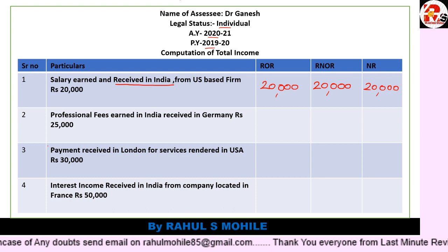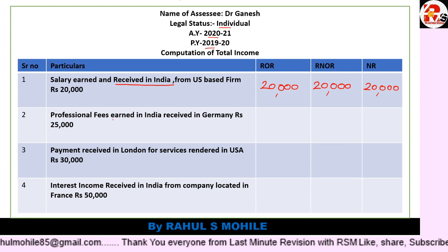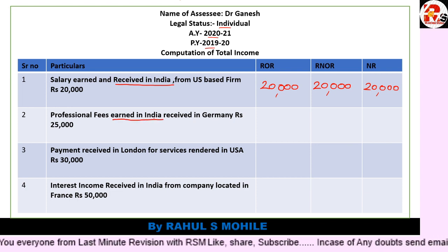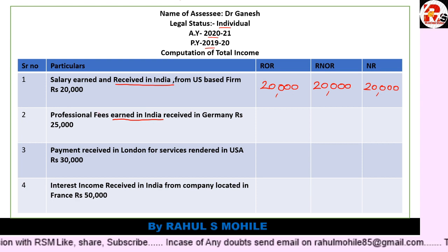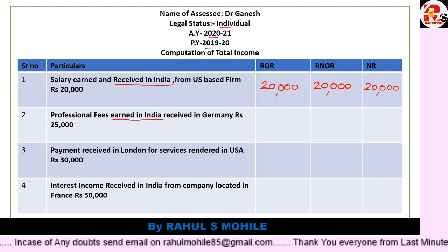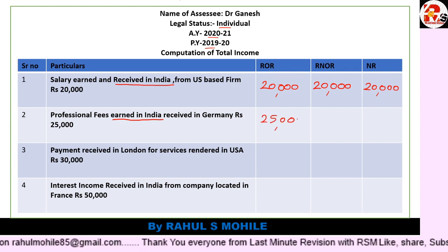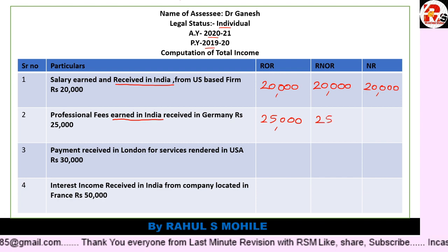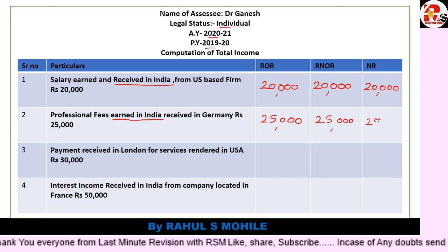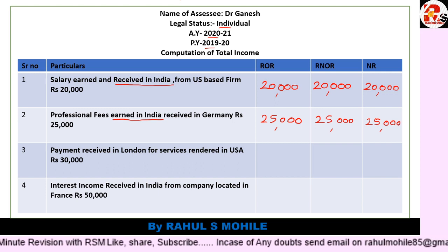Next point: professional fees earned in India but received in Germany. Note carefully — received where? Germany. But earned where? India. It doesn't matter where you receive it — what matters is where the income accrued or arose. It arose in India, so it is India-related income, and it goes in all three columns. Professional fees are ₹25,000, so write 25,000 in ROR, RNOR, and NR.